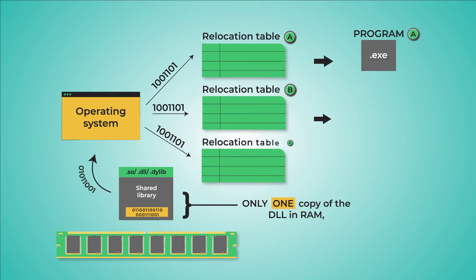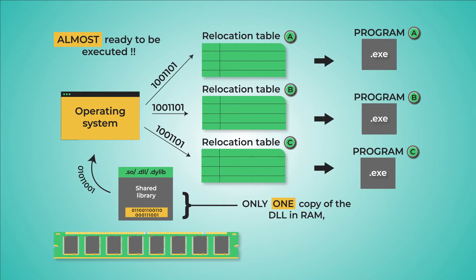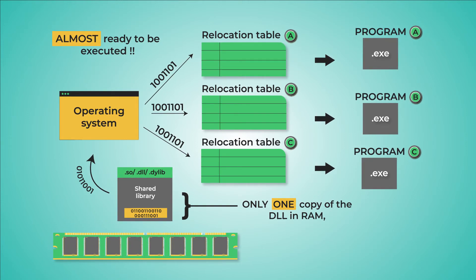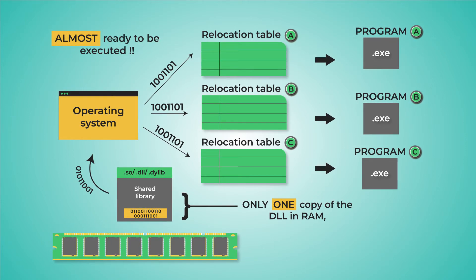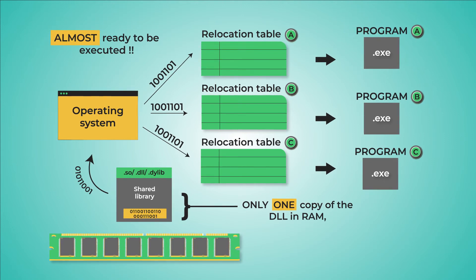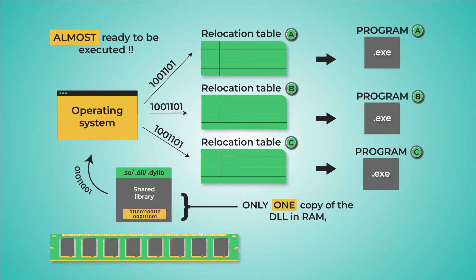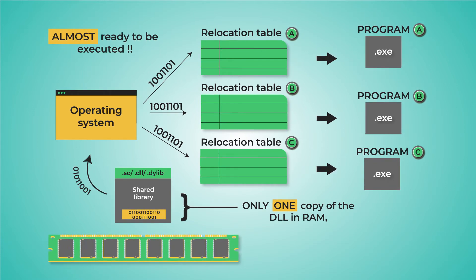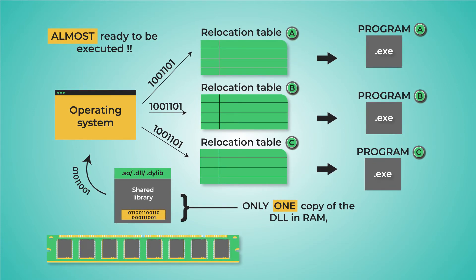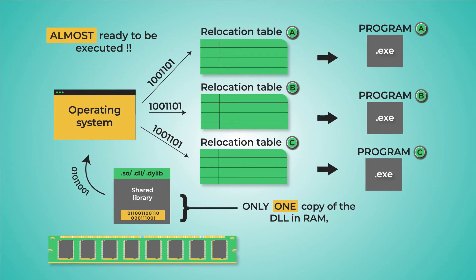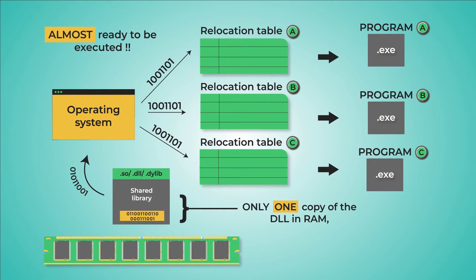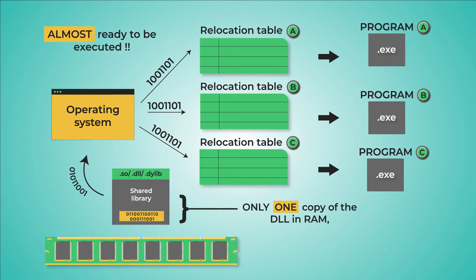The correct technical term for such wandering, floating, nomadic code is position-independent code. Each time a running program requests to use that particular position-independent library module as a dependency, the OS will use some magic to relocate the shared library within that program's RAM environment without having to alter the original shared library file in RAM, enabling the OS to share the library without copying it for each separate RAM environment. Relocation is the process where a position-independent shared library file is dynamically given a final location within a particular program's RAM environment.